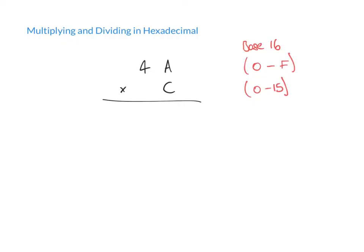What we have to begin with is C multiplied by A. C corresponds with the decimal number 12, and A corresponds with the decimal number 10. So what we really have — making a note to the side — is C times A, which corresponds with 12 times 10, and that gives us 120.